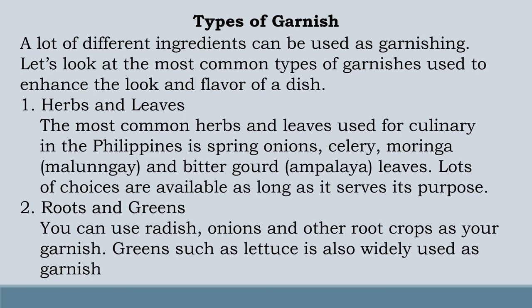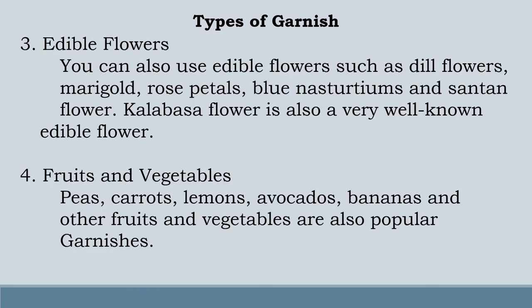Number 2: Roots and greens — you can use radish, onions, and other root crops as your garnish. Greens such as lettuce are also widely used as garnish. Number 3: Edible flowers — you can also use edible flowers such as dill flowers, marigold, rose petals, blue nasturtiums, and sunflower. Calabaza flower is also a very well-known edible flower. Number 4: Fruits and vegetables — peas, carrots, lemons, avocados, bananas, and other fruits and vegetables are also popular garnishes.